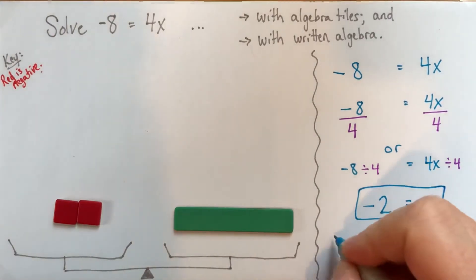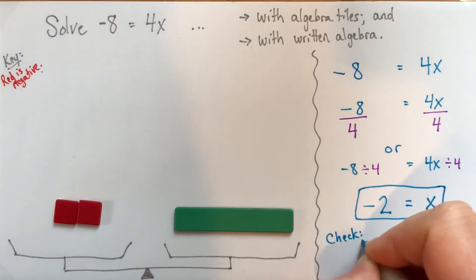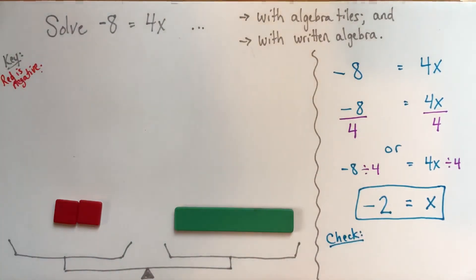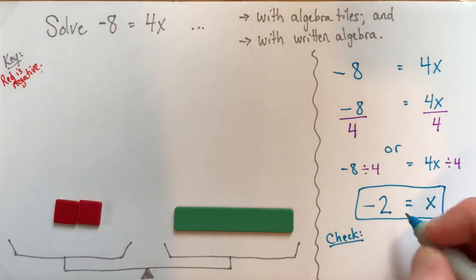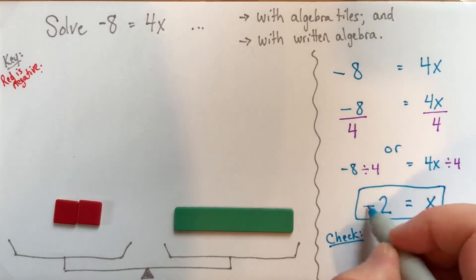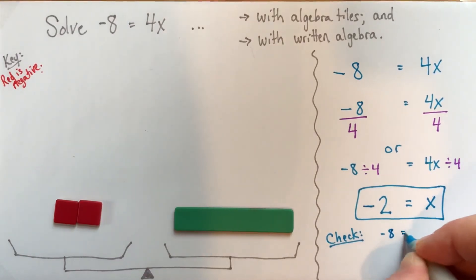And then we'll just do a quick check. If you don't write this down, depending on what your teacher says, you should write it down or not, but you should always do it. You want to at least think here about, does this value for my variable make the equation true? So I'm going to start just quickly by copying down the equation that I had.